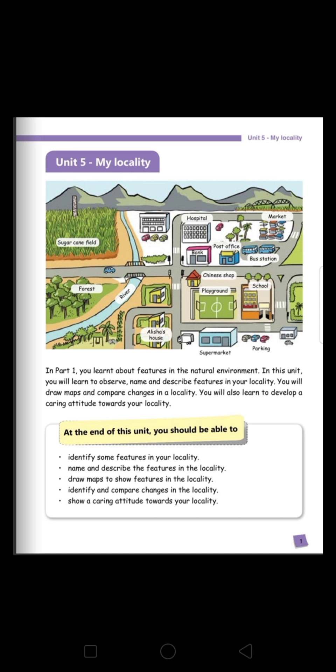Now let us observe Alisha's locality. Can you spot the house of Alisha? We have Alisha's house. There is a river, forest, sugar cane field, hospital, market, bank, post office, bus station, Chinese shop, playground, school, supermarket and a parking. So this is what a locality is — the things that you can find around you, around the place where you live.